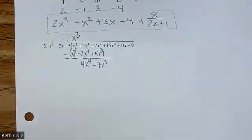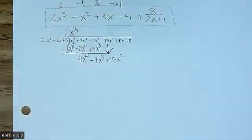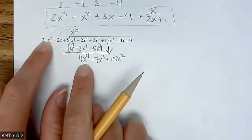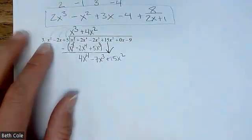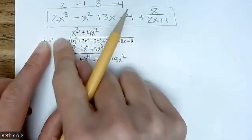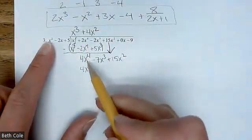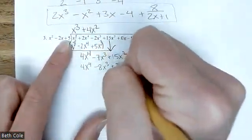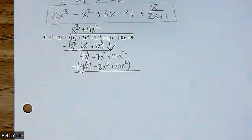And then bring down the next one and do it all over again — it's just a cycle. Compare the first two terms: you have an x² and you want it to be 4x⁴. What do you times by? 4x². You're going to take that, distribute it through here, and put it right underneath — it's all going to line up. That'll be 4x⁴ minus 8x³ plus 20x². Give it a hug and subtract. That's the hard step — subtraction because negatives are difficult.